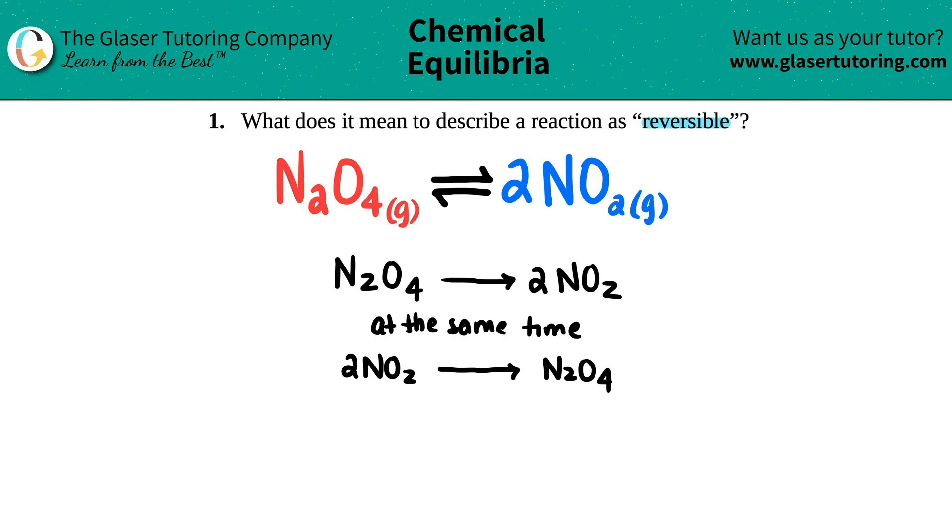That's what it means to describe a reaction as reversible. The forward reaction is literally what it's written as. In this case, as N2O4 is being turned into 2NO2, the forward reaction is happening at the same time as the reverse reaction. This is the forward reaction and this is the reverse reaction. That's what it means to be reversible - there's actually two reactions, the forward one and the reverse one, and they're happening at the same time.